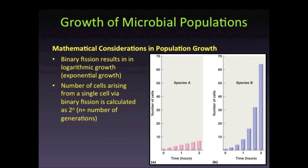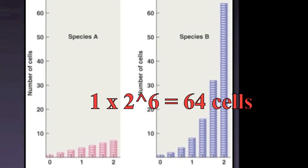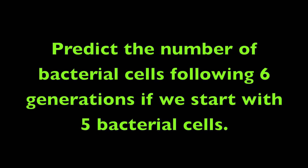The organism on the right in the image began with one cell and underwent binary fission six times. Thus the number of generations is six, so we can calculate one cell times two raised to the power of six, equals a total of 64 cells. Now let's practice: predict the number of bacterial cells following six generations if we start with five bacterial cells.